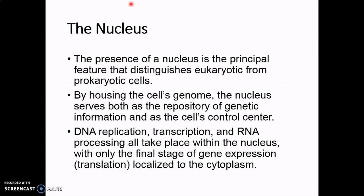To start off, let's think about the nucleus itself. The presence of the nucleus is the key feature that distinguishes eukaryotes from prokaryotes. Prokaryotes are thought of as a big open bag that holds all of the proteins, all of the DNA, and everything happens in that one space. In eukaryotes, that organization is achieved by membranes. The nucleus serves as a repository for genetic information, but is also acting as the cell's control center.